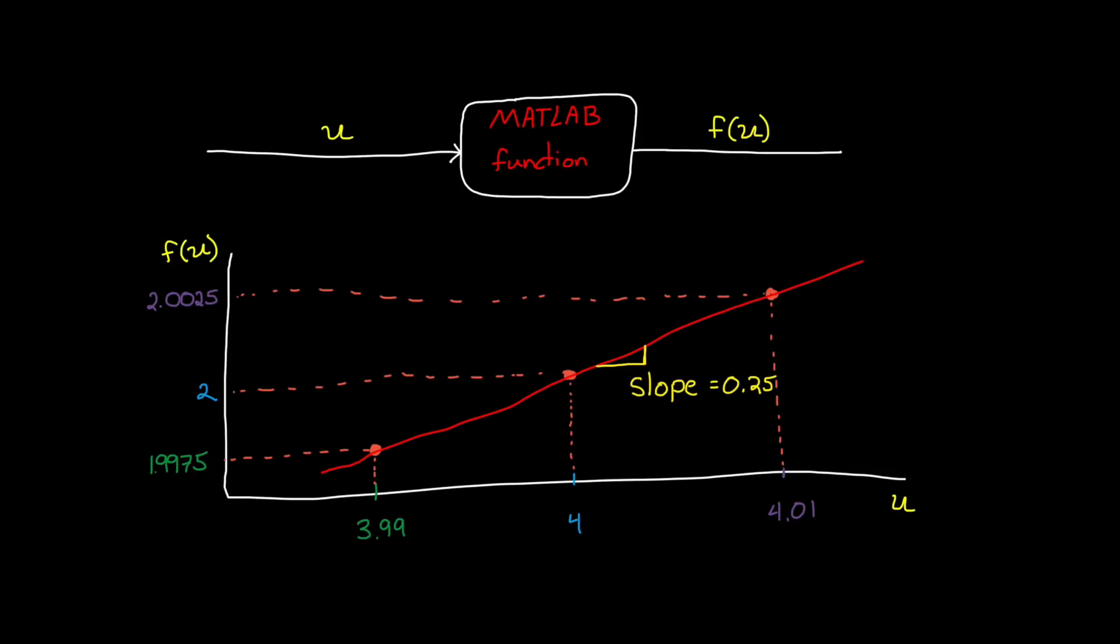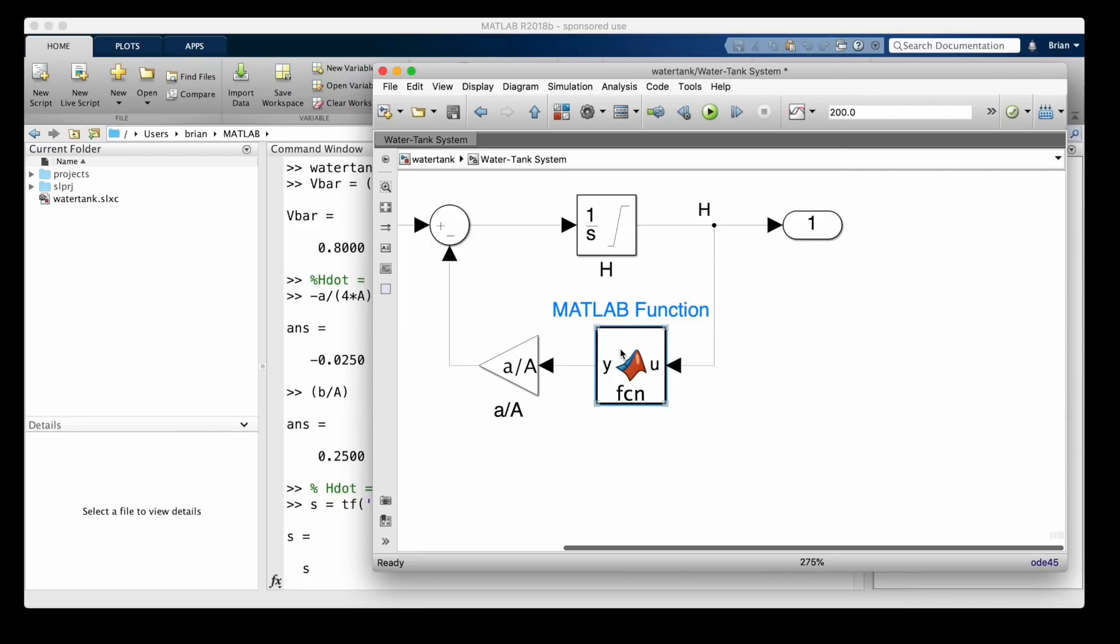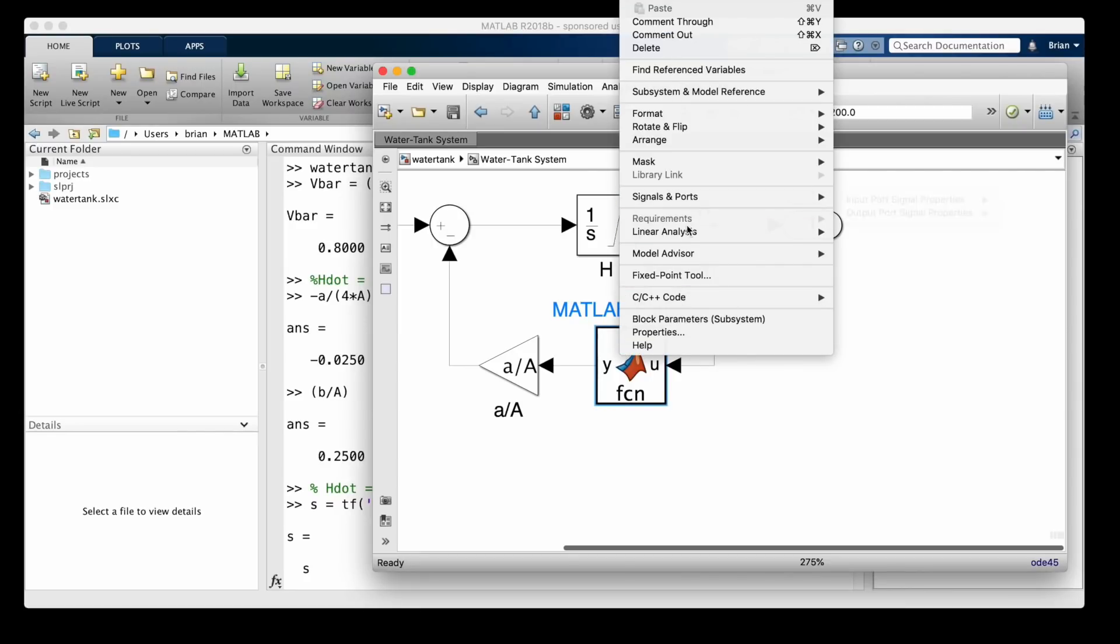Now if you don't want to rely on numerical approximation for the Jacobian, there is a third way that Simulink can handle nonlinear blocks. You can decide how you want a nonlinear block to linearize, and then assign that linearization to the block. You do this by right-clicking and selecting Linear Analysis, and then Specify Selected Block Linearization.